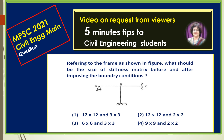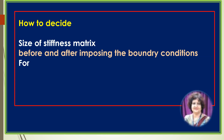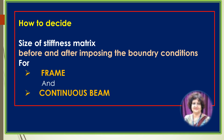Welcome back to one more video related to civil engineering competitive examinations. I am making this video on request from some of my viewers. In this video you will learn how to decide the size of the stiffness matrix before and after imposing the boundary conditions for frames and continuous beams. Such questions are very commonly asked in civil engineering competitive examinations and also in interviews.